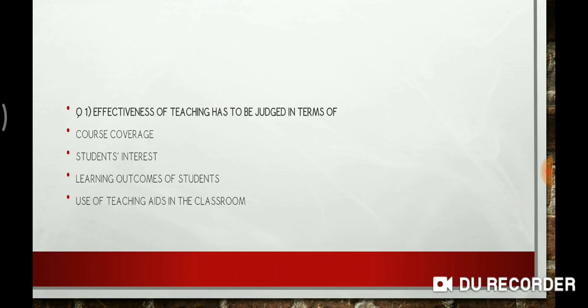Question 1. Effectiveness of teaching has to be judged in terms of: course coverage, student's interest, learning outcomes of students, or use of teaching aids in classroom. You have to choose the most appropriate option. The most appropriate option is learning outcomes of students.